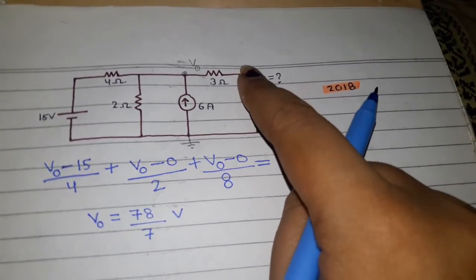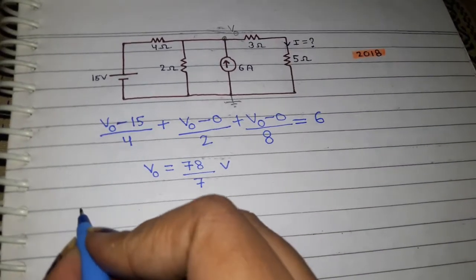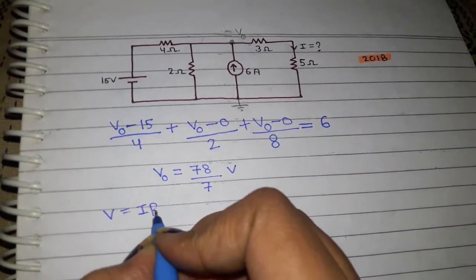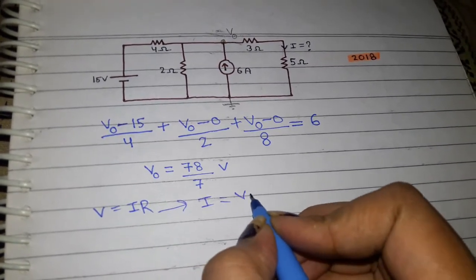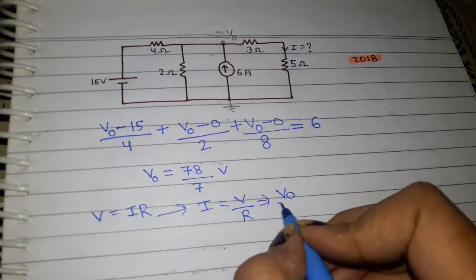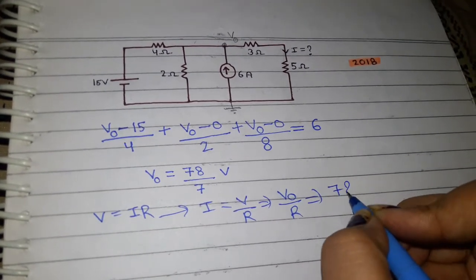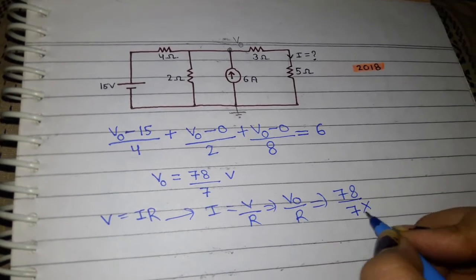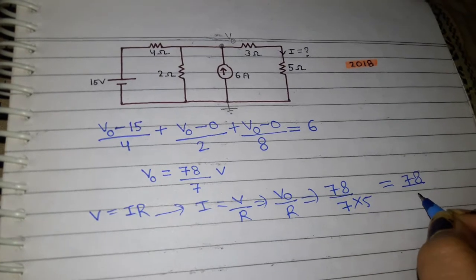Now we come to our question: what is the value of current through this particular resistance? You might think V equals IR, so I equals V by R, which in this case is V_naught over R. So you might compute 78/7 divided by 5, giving 78 over 35, and tick that as the answer.